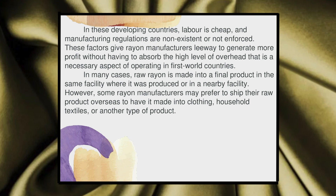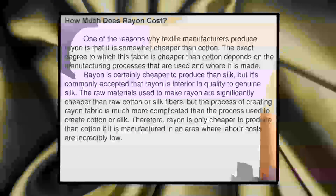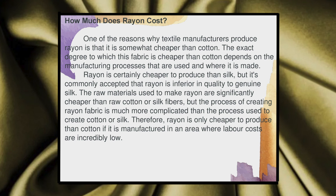However, some rayon manufacturers may prefer to ship their raw products overseas to have them made into clothing, household textiles, or other types of products. One of the reasons why textile manufacturers produce rayon is that it's somewhat cheaper than cotton. The exact degree to which this fabric is cheaper depends on the manufacturing processes used and where it is made. Rayon is certainly cheaper to produce than silk, but it's commonly accepted that rayon is inferior in quality to genuine silk. The raw materials used to make rayon are significantly cheaper than raw cotton or silk fibres, but the process of creating rayon fabric is much more complicated. Therefore, rayon is only cheaper to produce than cotton if it is manufactured in an area where labour costs are incredibly low.